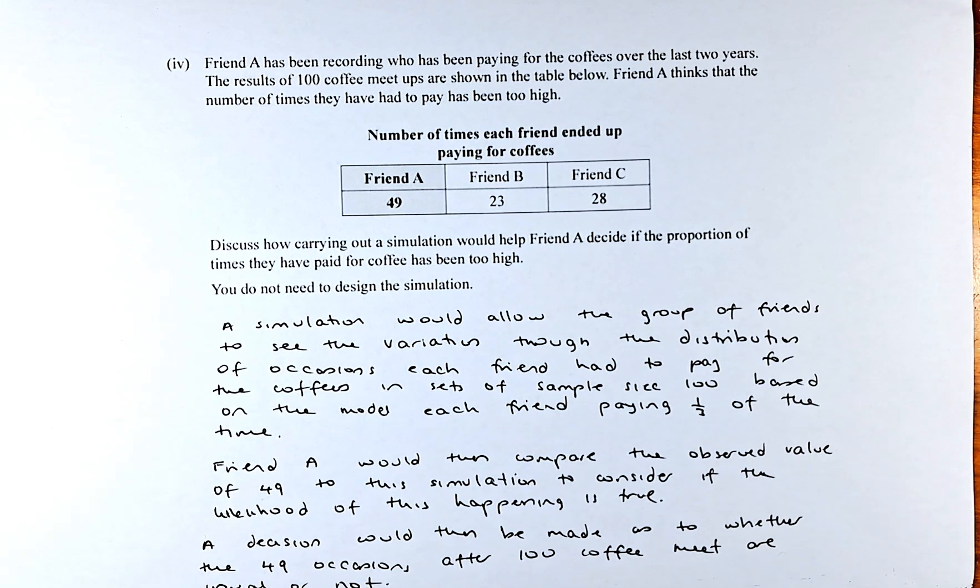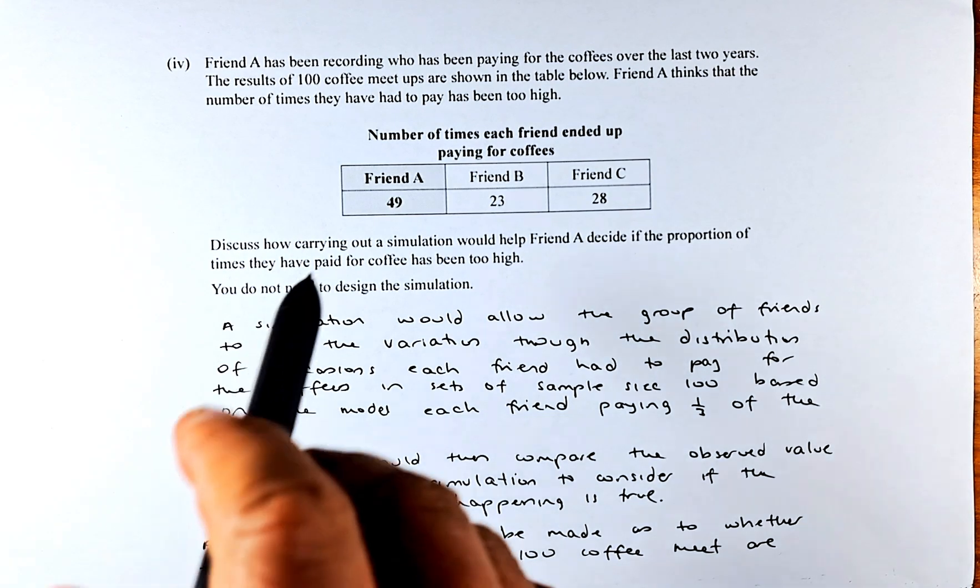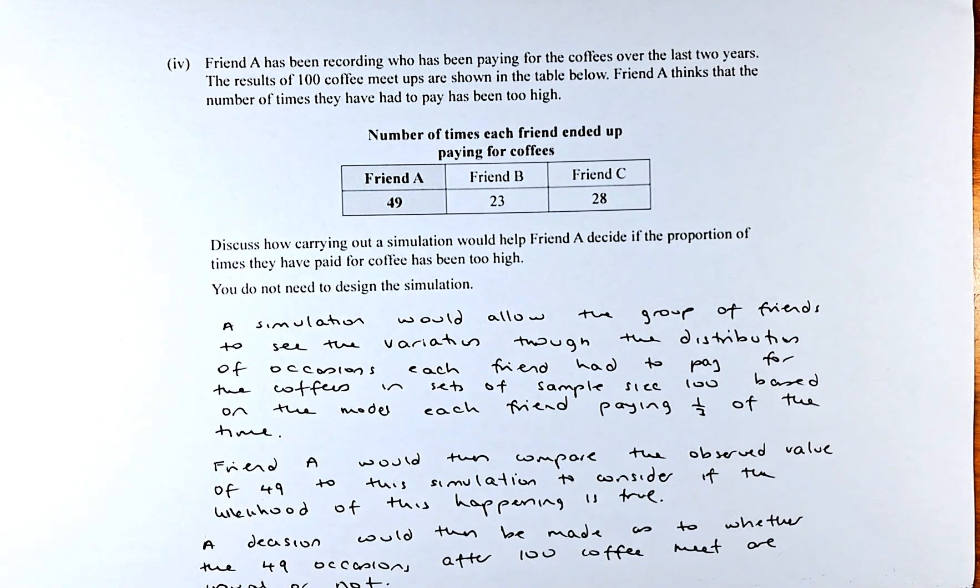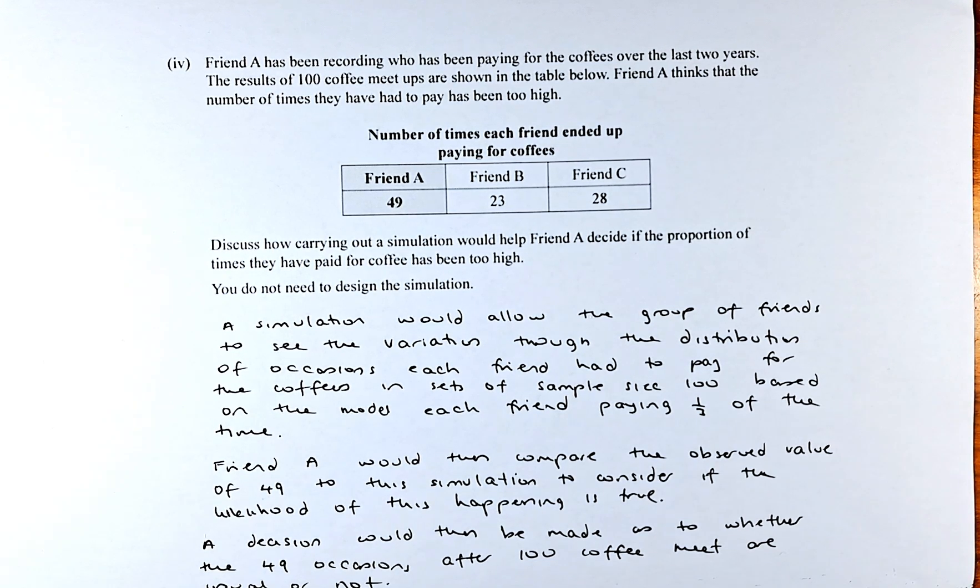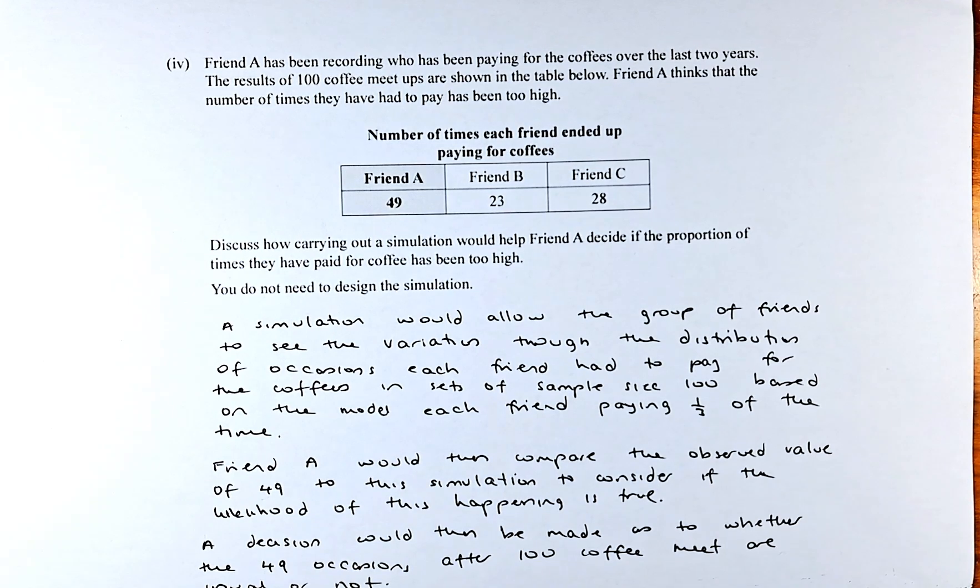You need to calculate the probability, the experimental probability if you do the simulation, and compare whether 49 is a fair result. A decision would then be made as to whether the 49 occasions out of the 100 coffee meetups are usual or not.